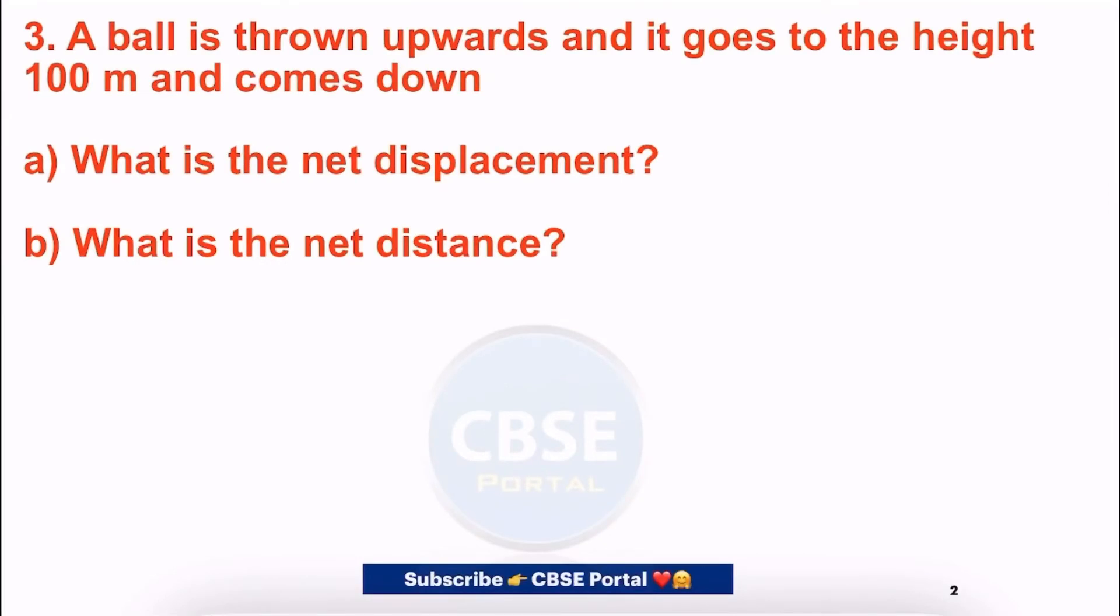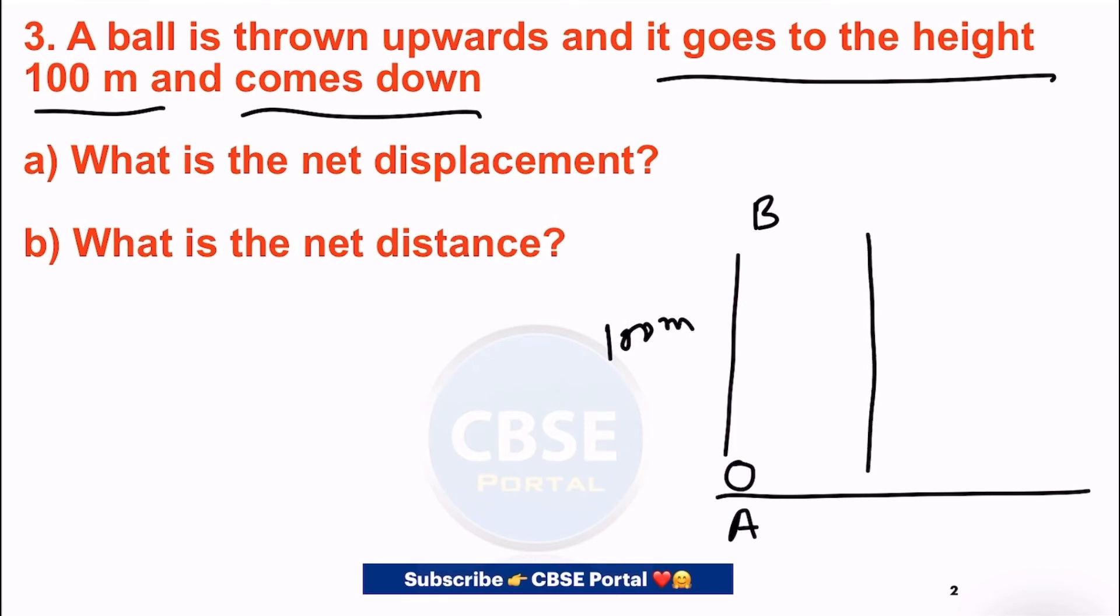Now let us talk about question number three. A ball is thrown upwards and it goes to the height of 100 meters and comes down. Basically, at position A, the ball is thrown and it reaches position B, traveling a distance of 100 meters. Then from position B it comes down to position C. This distance is also 100 meters.